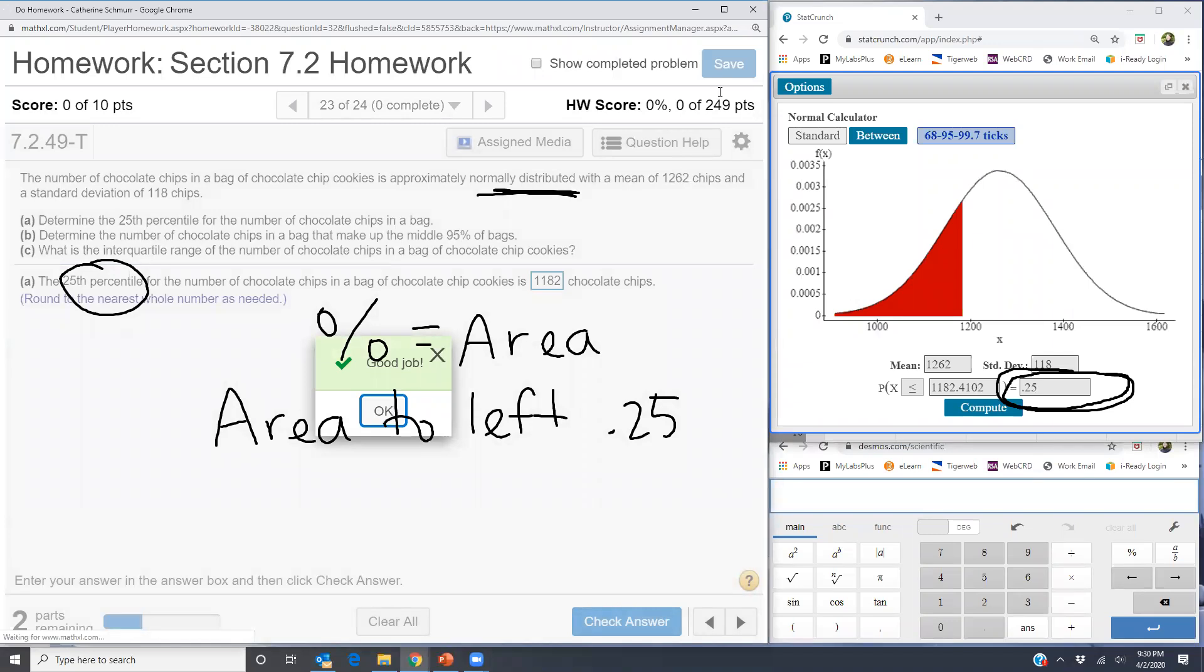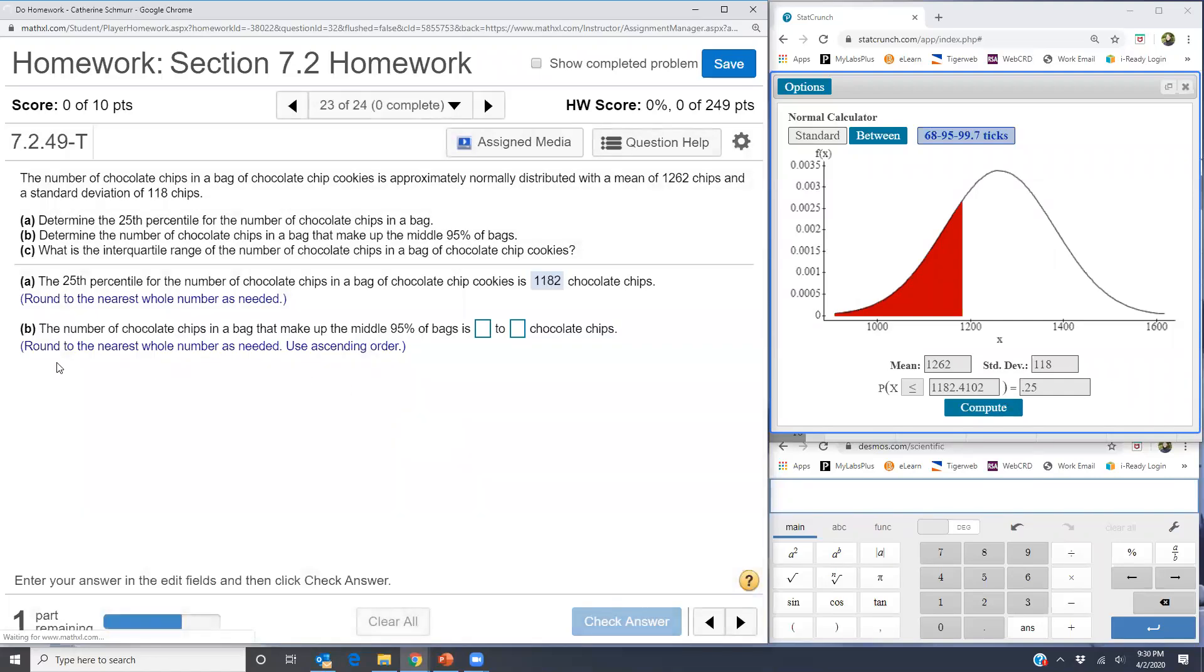Okay, perfect. So part B says the number of chocolate chips in a bag that make up the middle 95%. And again, a percent equals an area when we're talking about a continuous probability distribution.